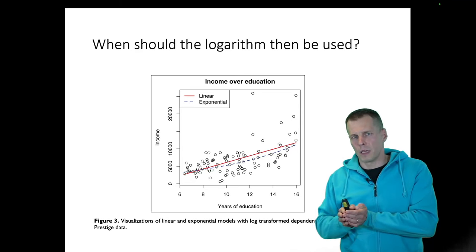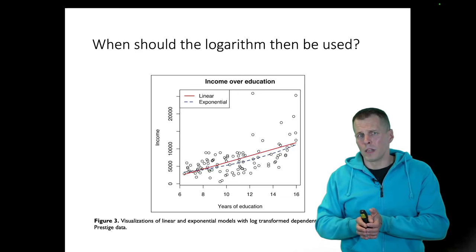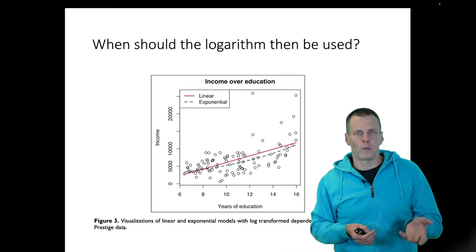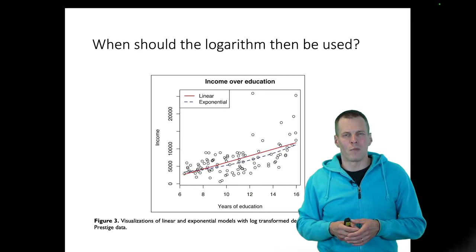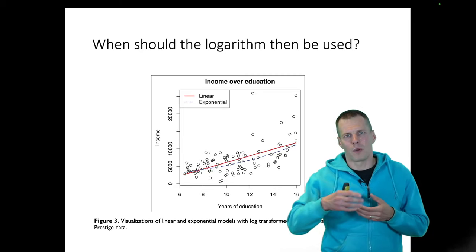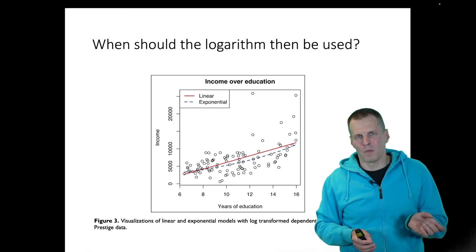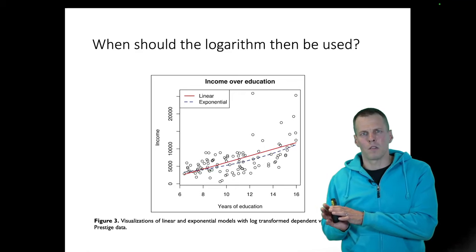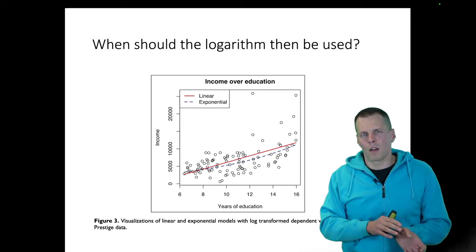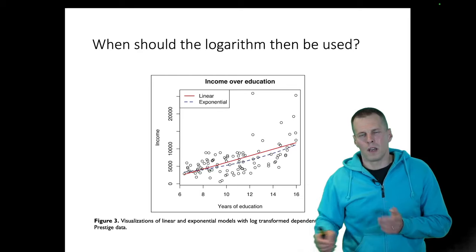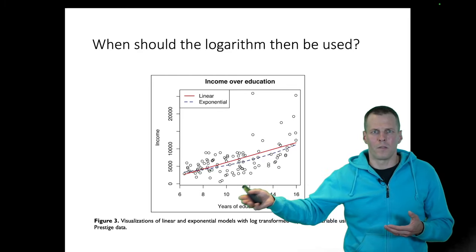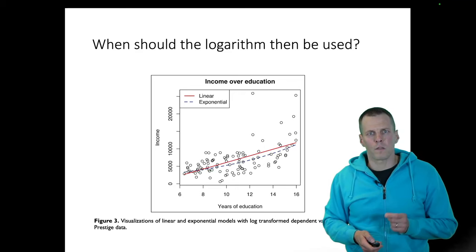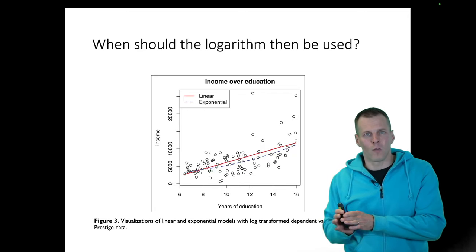In this case the log transformation also makes sense conceptually, because people negotiate salary increases proportional to their current income. You think about whether more training increases your income by 10% or 20%, not in absolute dollars. The reason is marginal utility of money — the first thousand dollars gives you a lot more than the second thousand. So log transformation is useful for modeling non-linear relationships, but it's not needed for making any statistical tests behave well.